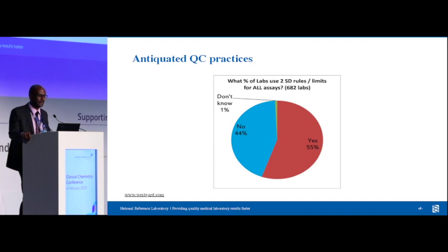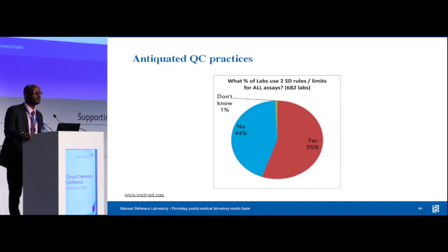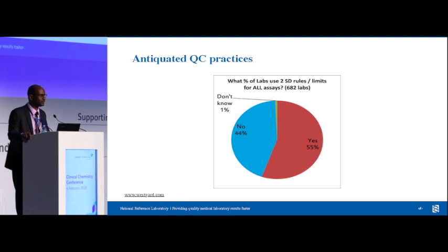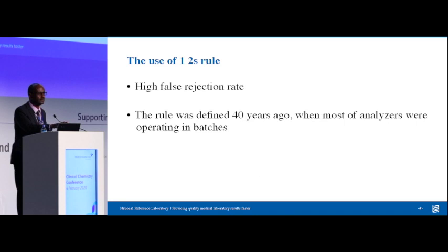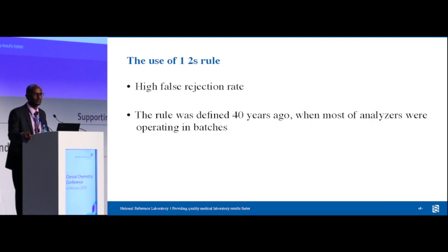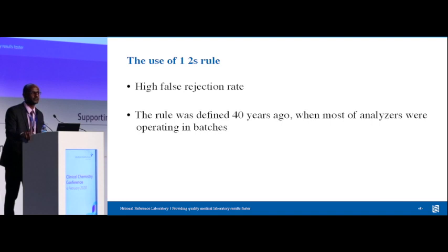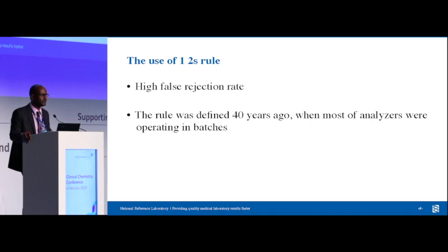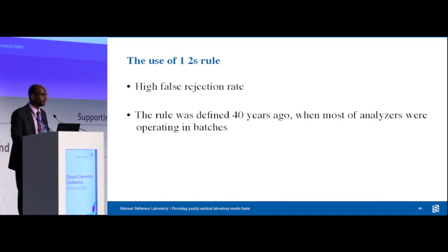Westgard did a survey distributed to global laboratories to see their QC practices. He asked what percentage of labs still use the 2SD rule. Unfortunately, up to 55% of laboratories are still using this outdated 1-2S rule — despite the fact that Westgard himself encouraged laboratorians to stop using it. It was defined 40 years ago when technology was different. Nowadays there are a lot of alerts to tell us when the system is out of control, so there's no need to use this rule because of its high false rejection rate.